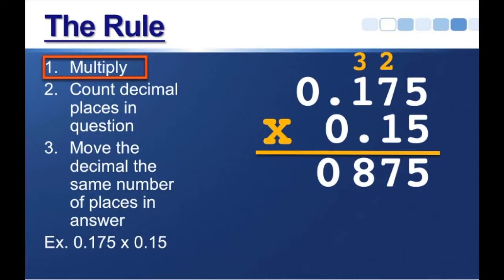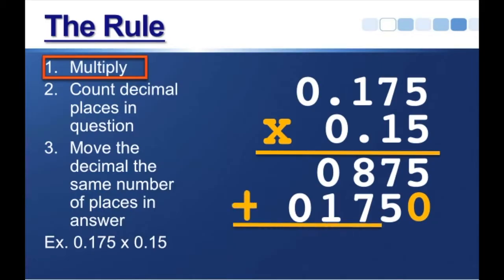Well, we still have more multiplying to do, because we still have to multiply by the 1. So, let's get rid of those numbers up top, put a placeholder, and then start our multiplication. 1 times 5 is 5, 1 times 7 is 7, and 1 times 1 is 1. And 1 times 0 is 0. We can always go into the extra place.